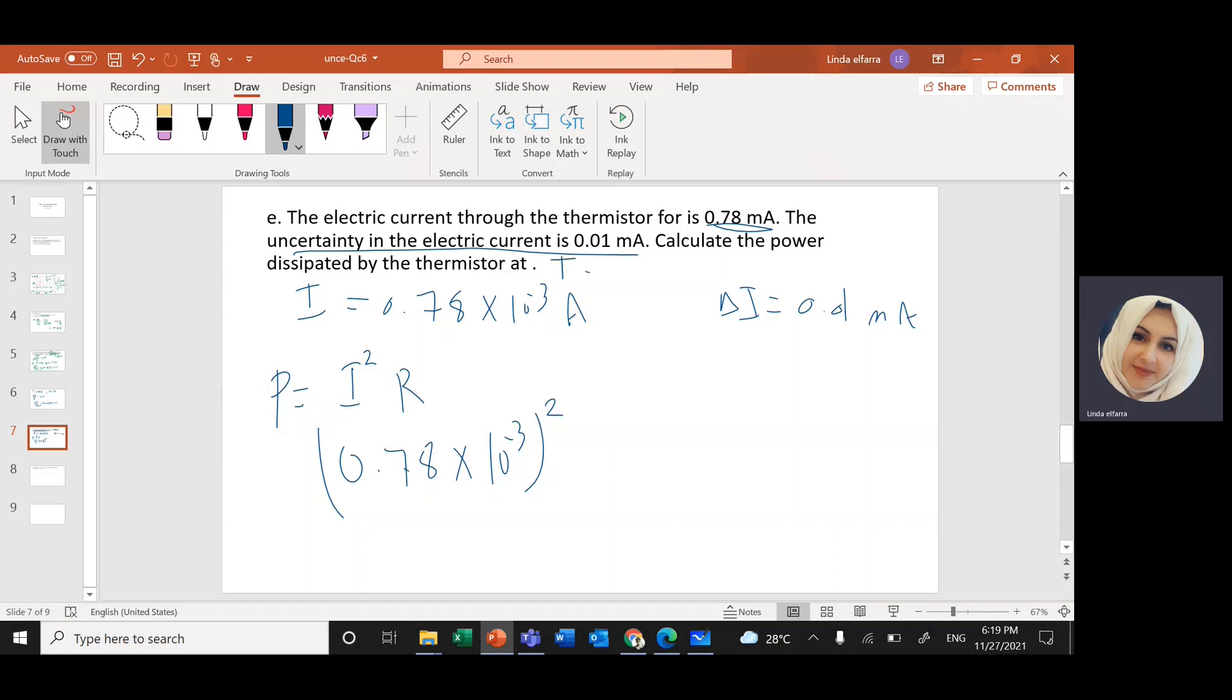So it's equals to I squared times R. I is 0.78 times 10 to the power negative 3. The resistor here. I need the value at T 283 Kelvin. So at this temperature, we found the value of R from the graph was 7.5 ohm. And this will give me 4.5 times 10 to the power negative 6 watt per second. This is the power.